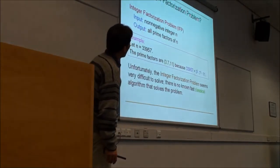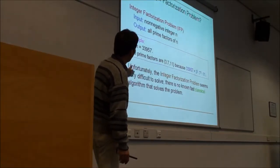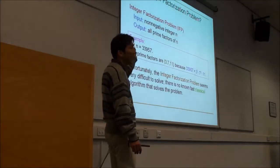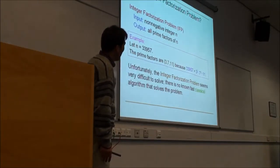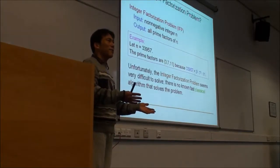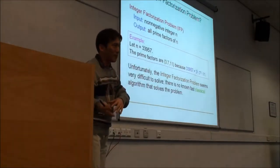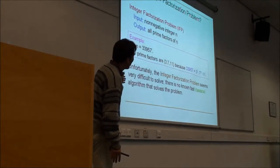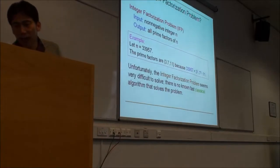Think about the very simple question of factorization. Given a non-negative integer n, we are asked to find all prime factors. For example, 33,927 — the factors are 3 and 700. It's very simple, right? But unfortunately, if the number gets bigger and bigger, we don't have any efficient classical algorithm. The classical computer can't solve the factorization problem in a very efficient way.